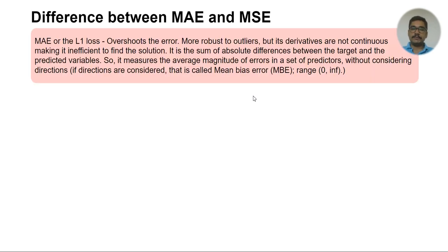First of all, mean absolute error, or the L1 loss, overshoots the error but is more robust to outliers. But since its derivatives are not continuous—meaning you calculate their mod value, so you don't have any squared term—this makes it very inefficient to find the solution. You cannot find the minimum and therefore cannot differentiate, so it's not differentiable in short. You calculate the absolute differences between the target value and the predicted value.